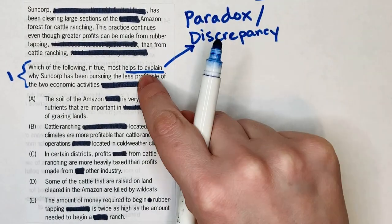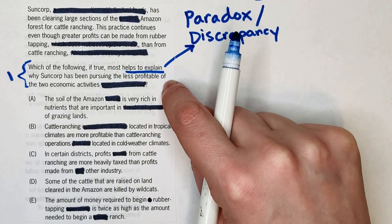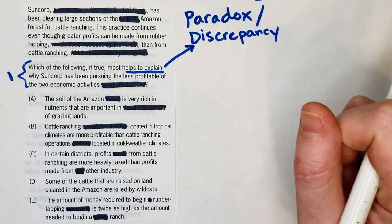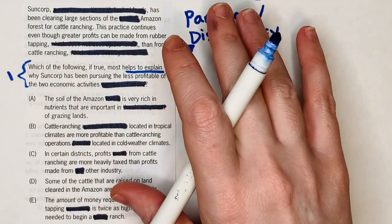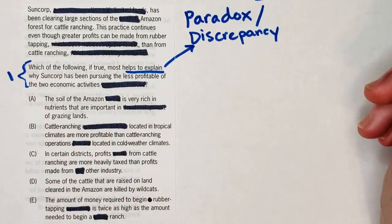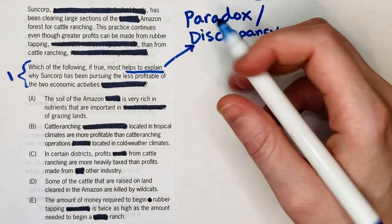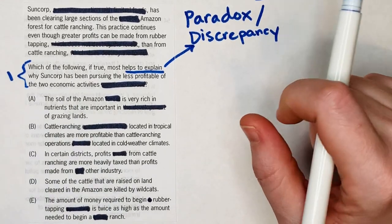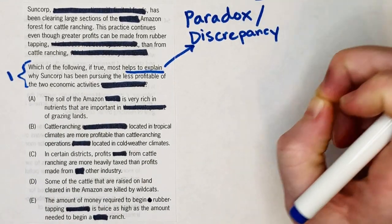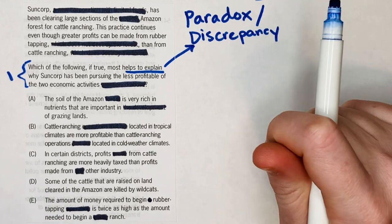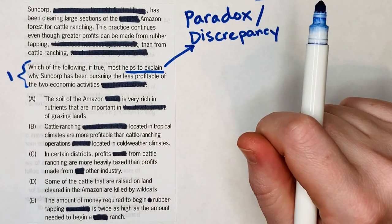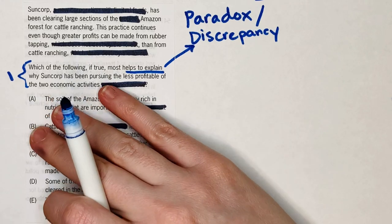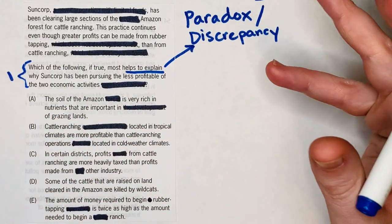We're trying to explain something that doesn't seem to make logical sense. In these kinds of questions, there'll be a scenario described with something about it that seems illogical, or two things that are irreconcilable. Your job is to figure out what that is — what doesn't logically make sense — and then the correct answer is going to justify it.